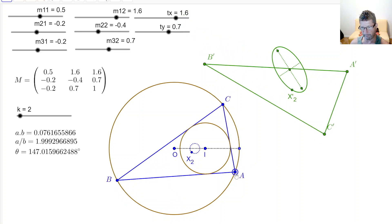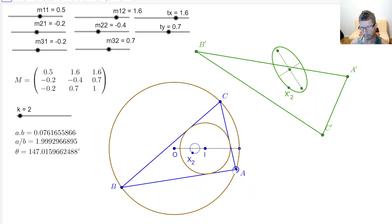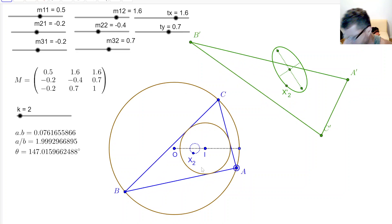We're still considering families of Poncelet triangles inscribed in a circle. Here I'm showing Chappell's porism, ABC inscribed in this outer circle.